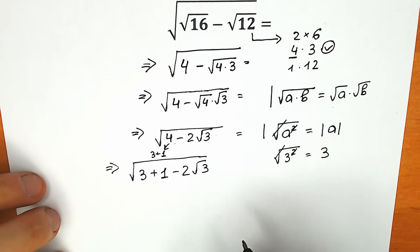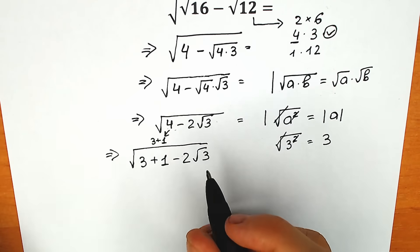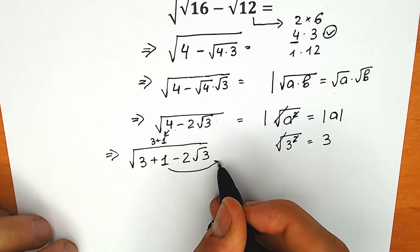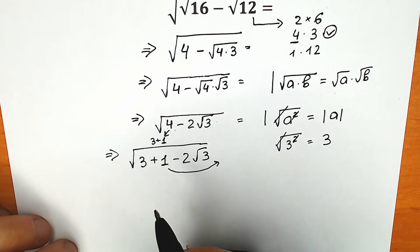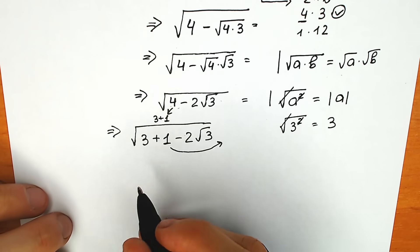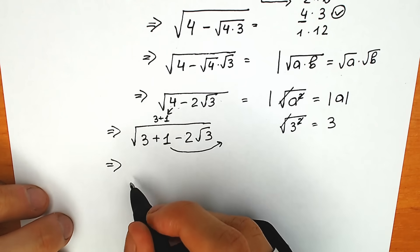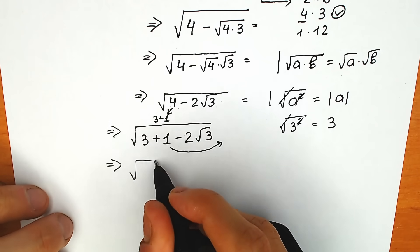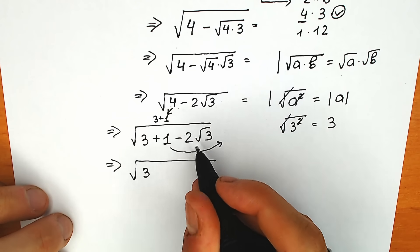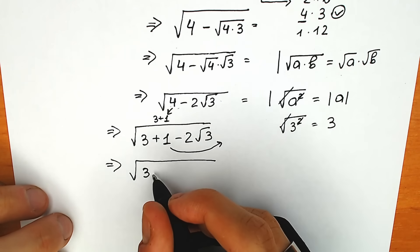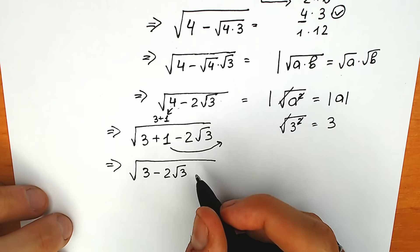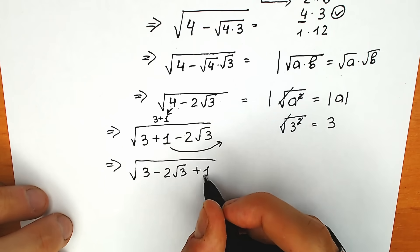What we're going to do next? Let's write the 1 on the third position. On the first position: 3. We can easily change position here since this is not multiplication or division. So we have: 3, then minus 2 square root of 3 on the second position, and plus 1 on the third position.